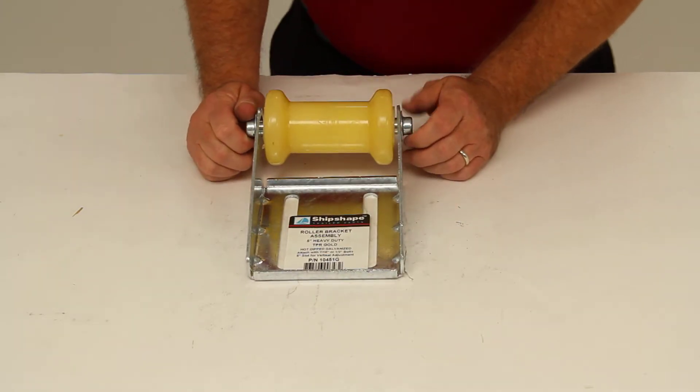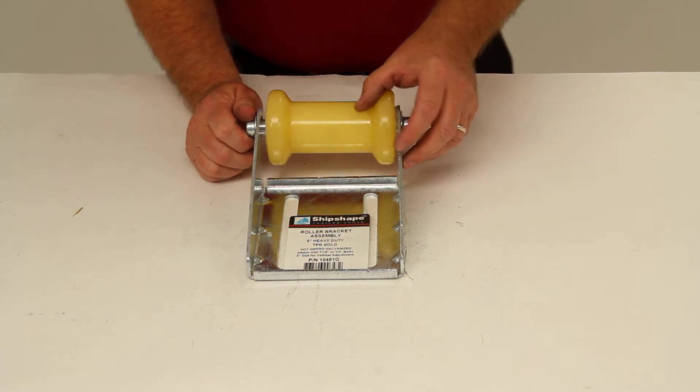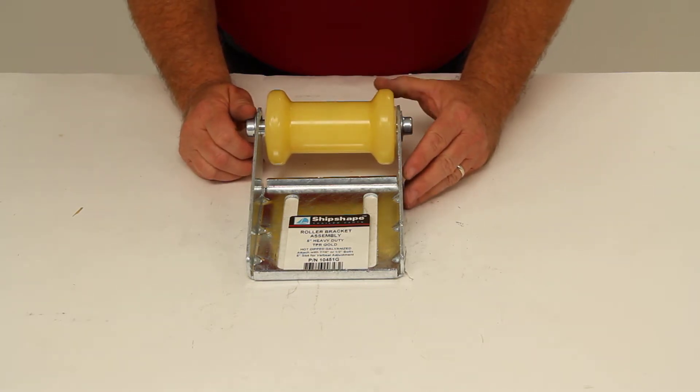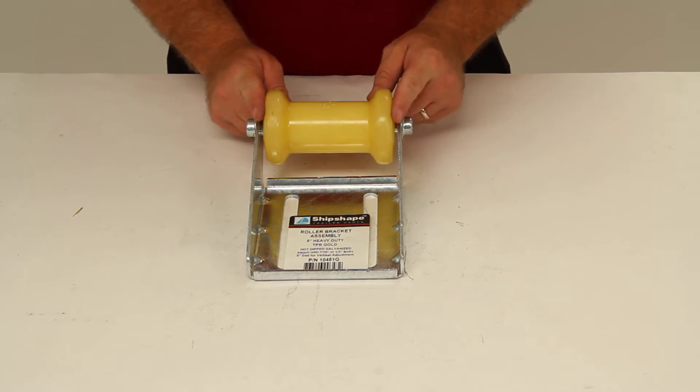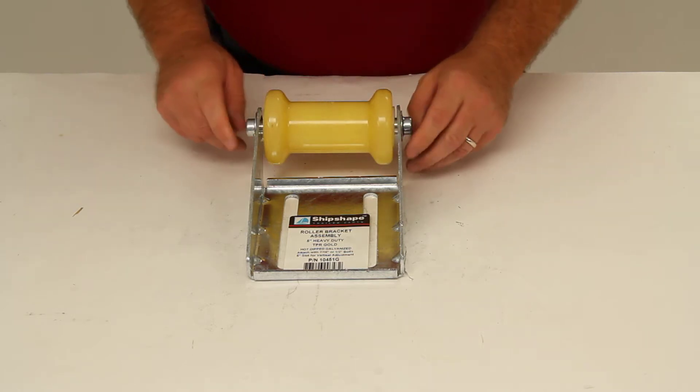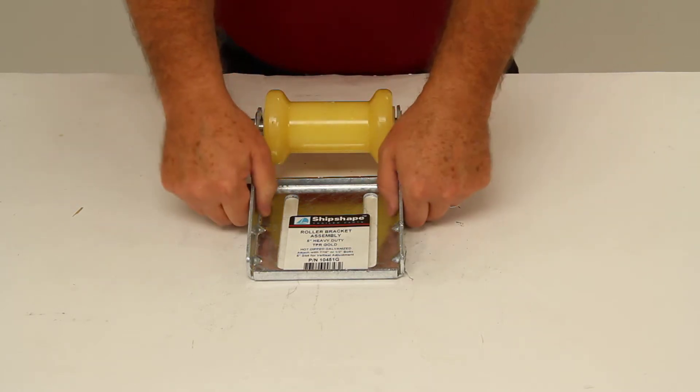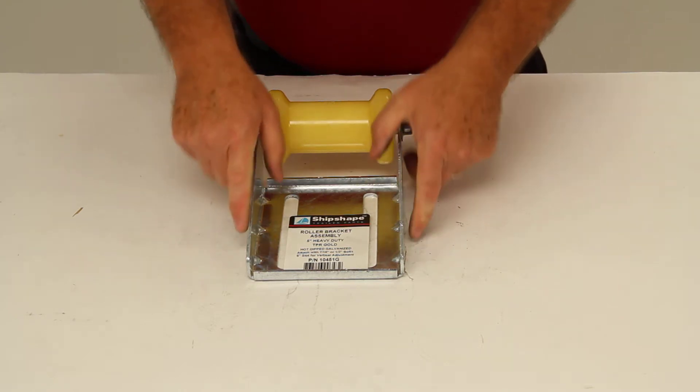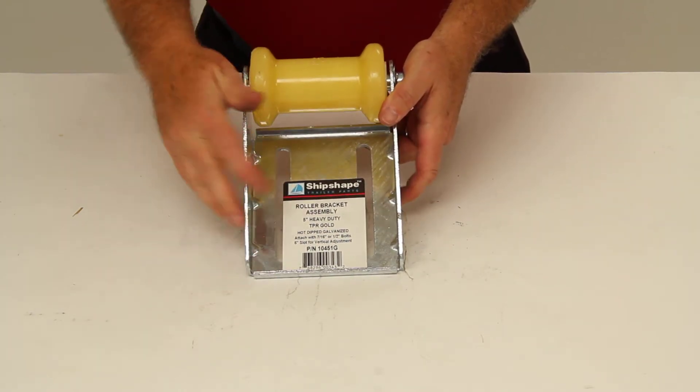This roller assembly will support your boat's keel for easy loading and safe transport on your trailer. Its 5-inch yellow thermoplastic rubber spool roller won't mark your boat. The galvanized steel panel bracket has slotted mounting holes for adjustability.